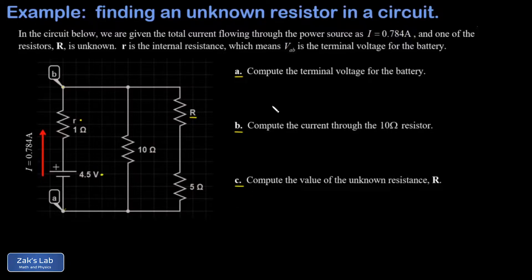So to get the terminal voltage of the battery, if I'm being formal about this, I can say that VA, the potential at node A, plus the 4.5 volts for the ideal EMF,